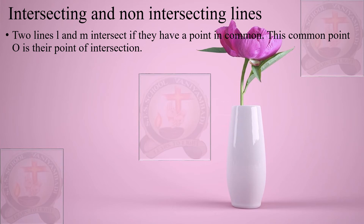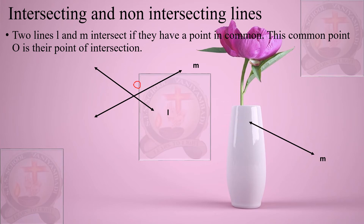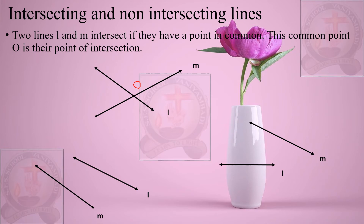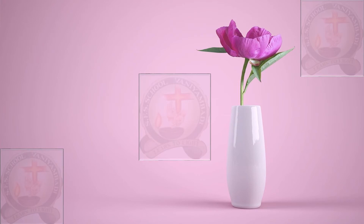Two lines L and M intersect if they have a point in common — this common point O is called the point of intersection. If lines L and M go in different directions and do not cross anywhere, they are called non-intersecting lines.